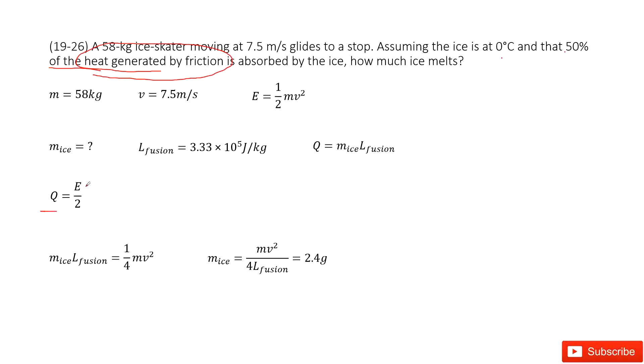Now how can we find E? E is the kinetic energy, so 1/2 mv squared. Now where does this energy go? It goes to melt the ice. So this Q becomes the mass of the ice times the latent heat constant. Mass of the ice times the latent heat constant.